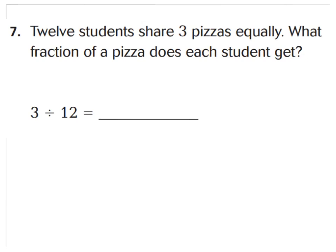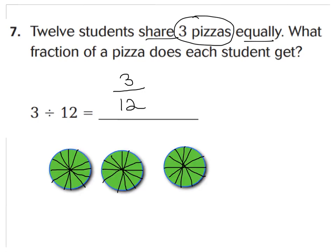For number seven, twelve students share three pizzas equally, so we know we're dividing. There's three pizzas divided by twelve friends. Each student gets three-twelfths. In the model, I made three pizzas and cut each into twelfths, because there's twelve friends, so each can get one slice from each pizza: one-twelfth plus one-twelfth plus one-twelfth equals three-twelfths. We can also simplify that and call it one-fourth, because those three pieces together resemble one-fourth of a pizza. That's why three-twelfths is equivalent to one-fourth.